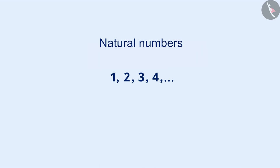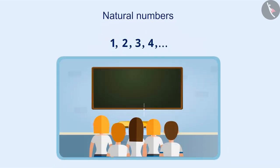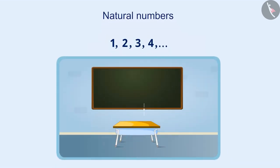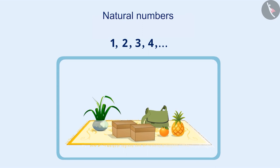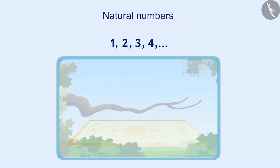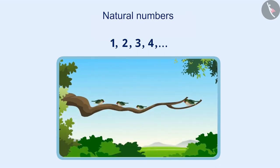We use numbers like 1, 2, 3 and so on for counting. But what if there is nothing to count? For example, if there are no students in the class, there is no one to count. What if all birds fly away from the tree? How do you express it in maths?